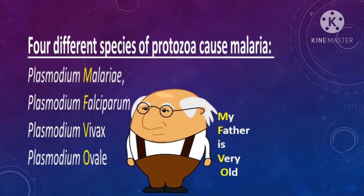There are four different species of Plasmodium: Plasmodium malariae, Plasmodium falciparum, Plasmodium vivax, and Plasmodium ovale. These can be remembered by the mnemonic 'My Father Is Very Old.'